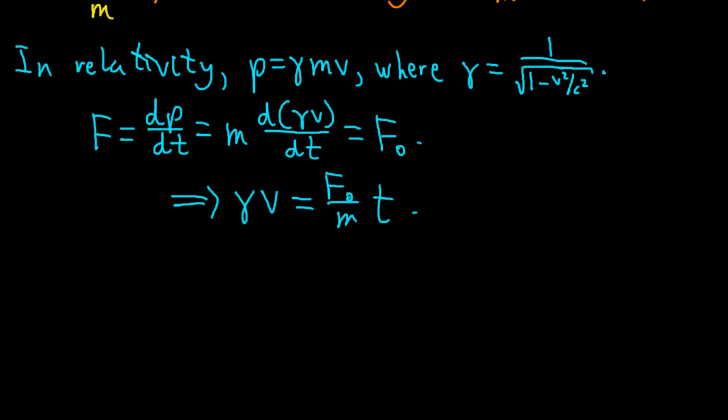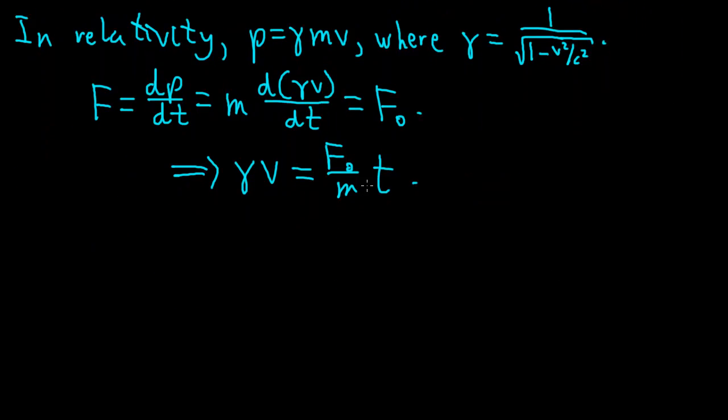Now, if we want to solve this equation and get velocity as a function of time, let me square both sides to get rid of the square roots. That means v squared over 1 minus v squared over c squared equals F0 over m t whole thing squared.